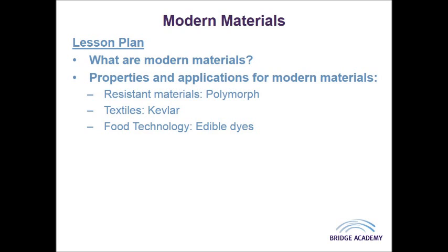Some other really interesting modern materials to know about include Gore-Tex. This is where they combine a porous membrane, which is laminated to a high-performance textile. This membrane has billions of pores, which allows moisture and vapour to escape, but they are so small that water droplets cannot penetrate. This keeps the user dry and cool — your sweat can escape through those pores, but if it rains, the membrane does not allow any water to seep through.